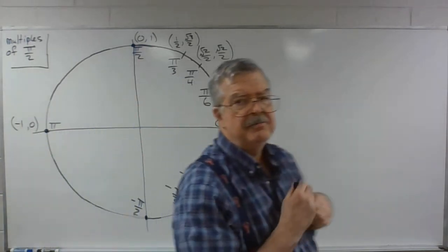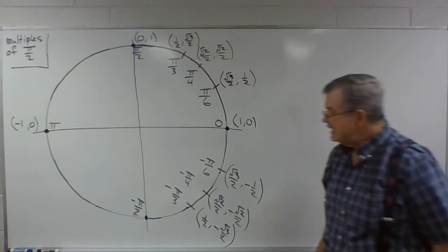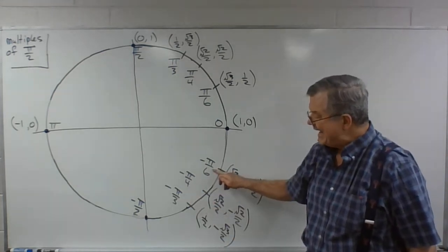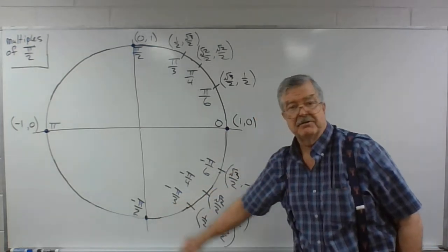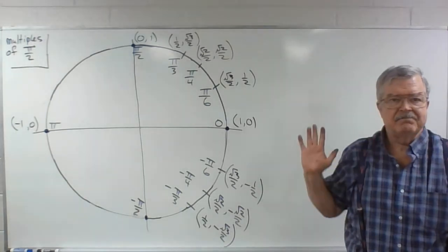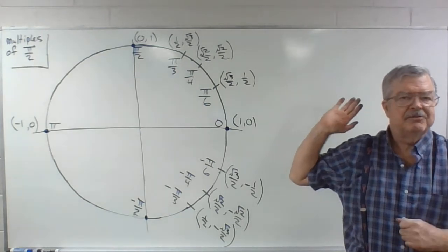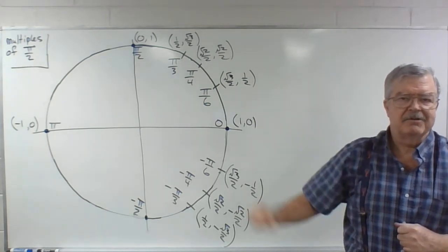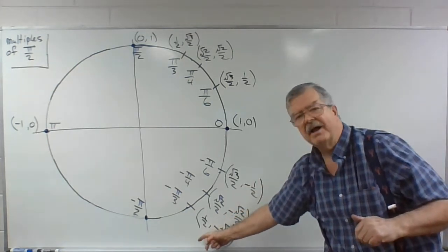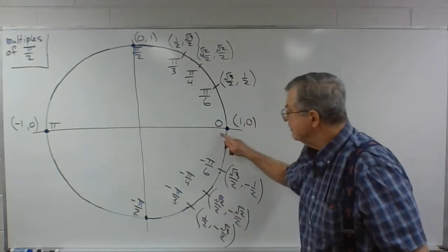I've included these because when we do inverse trig functions we'll have a need to know the sines and cosines of the negative angles from 0 to negative pi over 2. So after we learn the other unit circles with the multiples of pi over 3, pi over 4, and pi over 6, use that information to learn the sines and cosines of the angles between negative pi over 2 and 0.